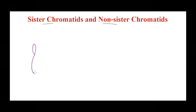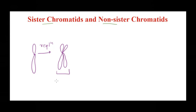Suppose this is one chromosome — it would undergo replication to produce its identical copy, and before they actually split up, they are attached at the centromere for a while. In this case, where the chromosome is duplicated, we call them sister chromatids. Sister chromatids are nothing but the replicated chromosome that is attached at the centromere before they split up.